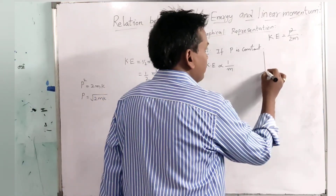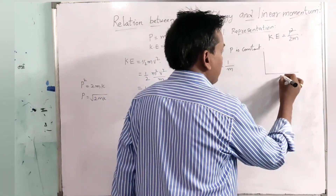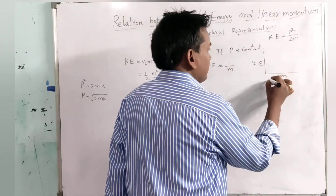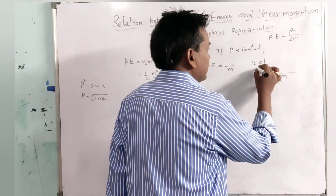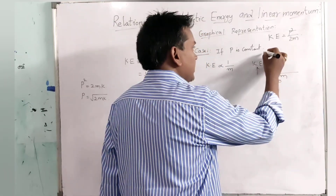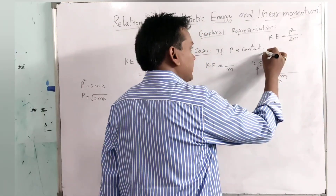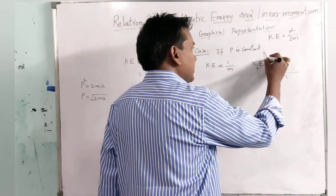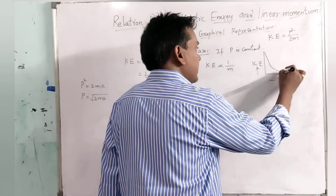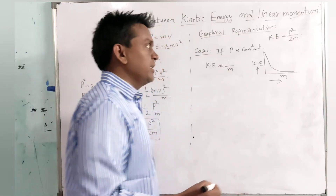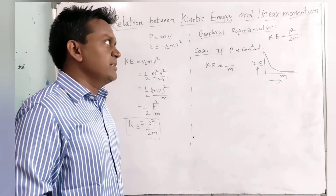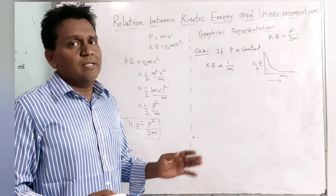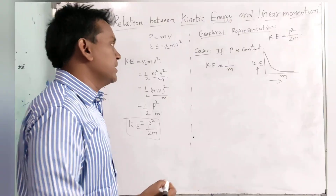If we see the graph for mass and kinetic energy — with mass on one axis and kinetic energy on the other — the graph will be like this: as the mass keeps on increasing, the kinetic energy will keep on decreasing. As the mass increases gradually, the kinetic energy decreases.